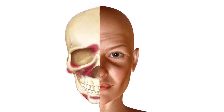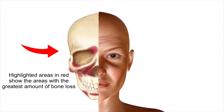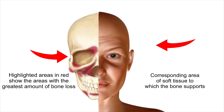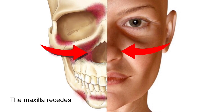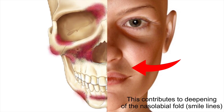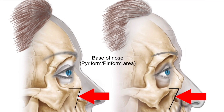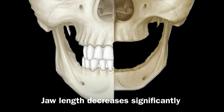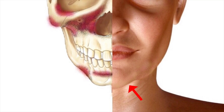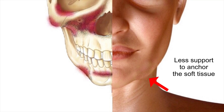Let's examine this picture. The highlighted areas in red show the areas with the greatest amount of bone loss, and on the right is the corresponding area of soft tissue that bone helps to support. Bone loss occurs mainly around the eyes, known as the periorbital area. Bone loss in the maxillary area causes receding, which contributes to deepening of the nasolabial fold or smile line, and to loss of support to the upper lip. The area at the base of the nose, known as the piriform area, also recedes and deepens with age, and reduced skeletal support contributes to a downward tip rotation of the nose. Jaw length decreases significantly, especially in women, contributing to loss of definition of the lower border of the face and less support to anchor the soft tissue, which is why we can get jowly.